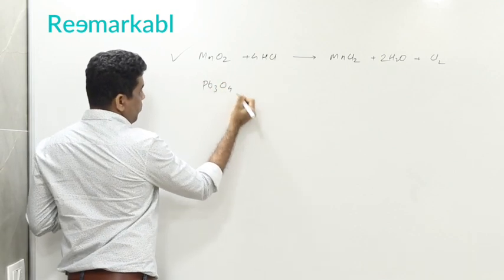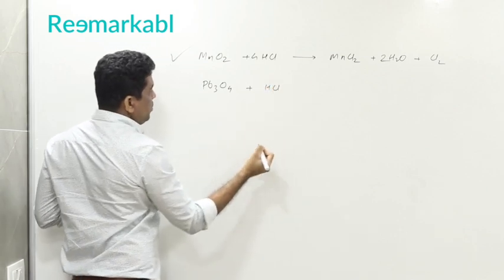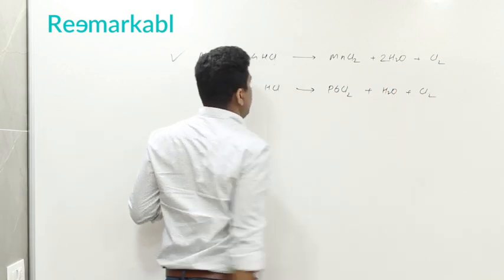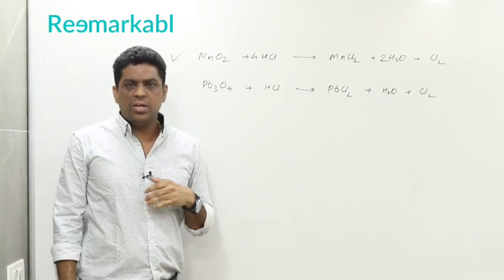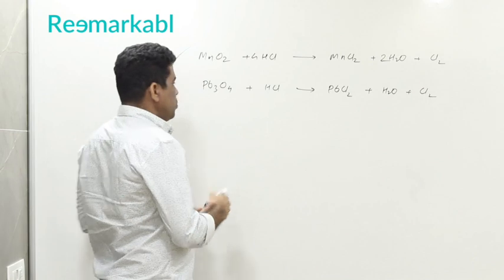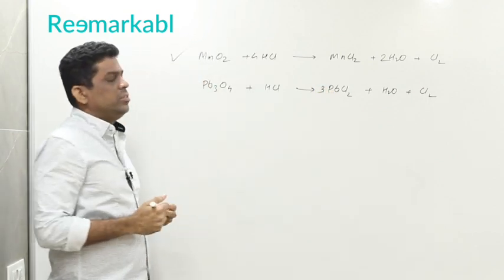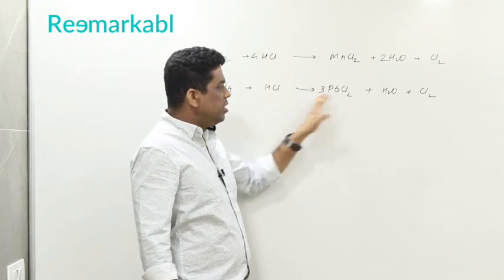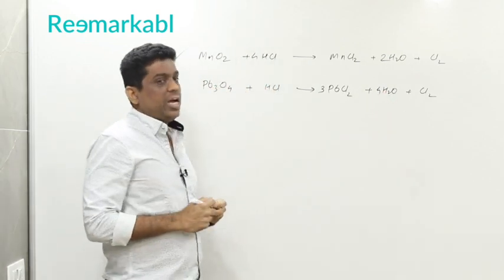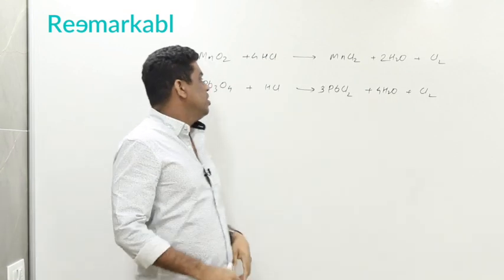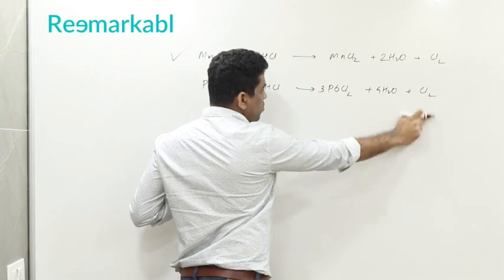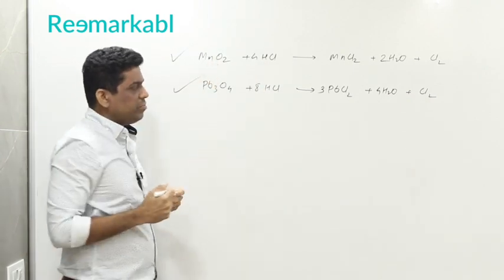The next compound is tri-lead tetroxide (Pb₃O₄) with hydrogen chloride, which gives lead chloride, water, and chlorine. Starting from the left: how many lead atoms? Three on the left, one on the right — multiply by three. Oxygen atoms: four on the left, one in water on the right — multiply water by four, so hydrogen becomes eight. Now count chlorine on the right: three times two is six, plus two is eight. This equation is balanced.